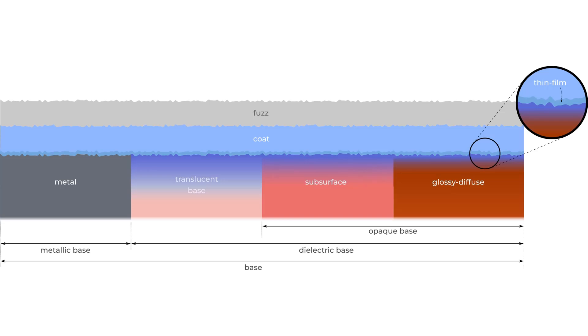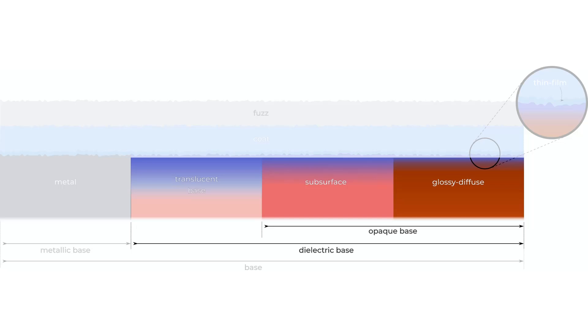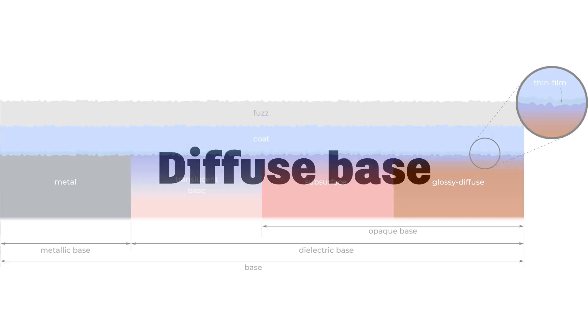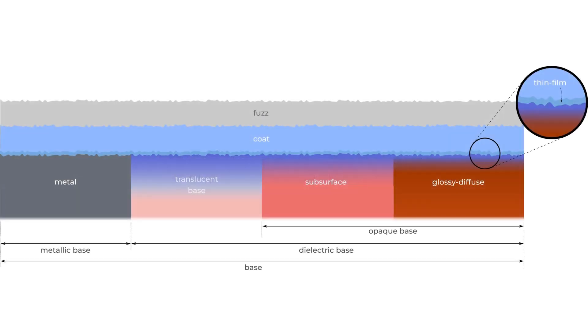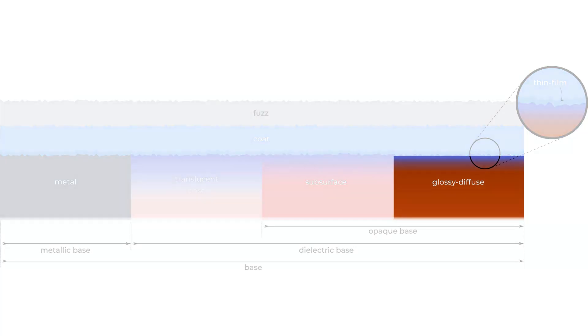Now let's turn to the dielectric case, where base metalness is zero. In this case, the surface may transmit light with optional scattering in the interior. This has three components: the translucent base, the subsurface, and the diffuse base. Let's look at the diffuse case first, which is the default. When the transmission weight is zero, which is the default, the base is a completely opaque dielectric with a dense internal scattering medium.